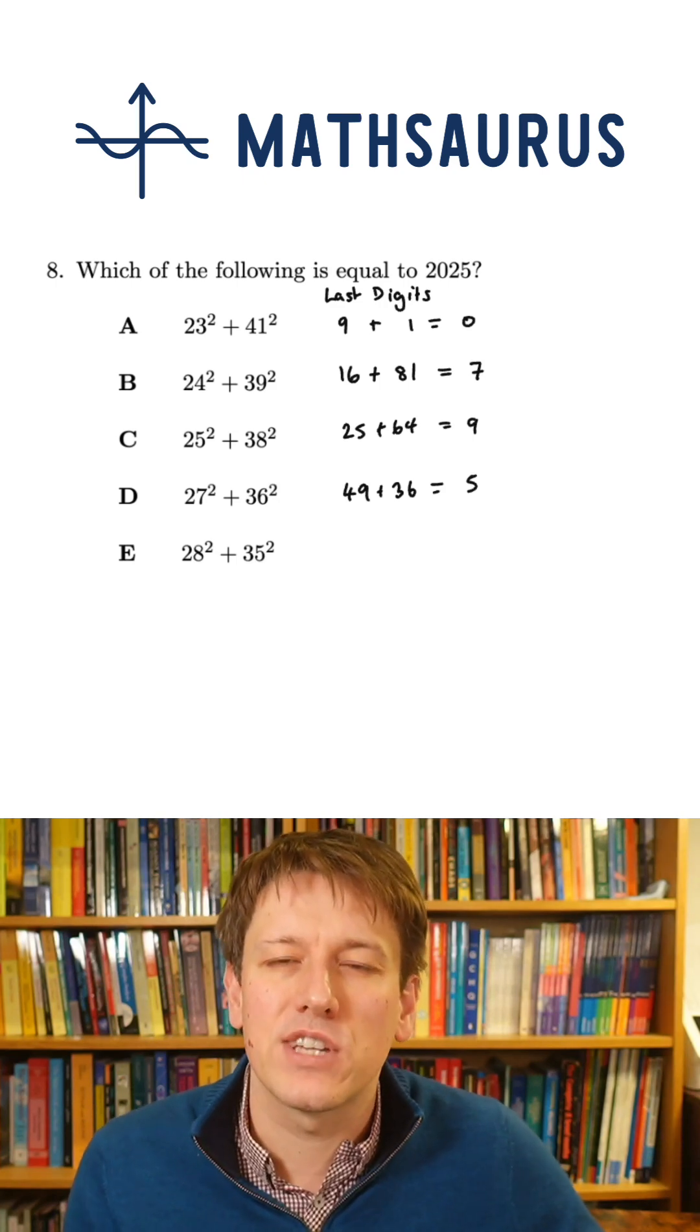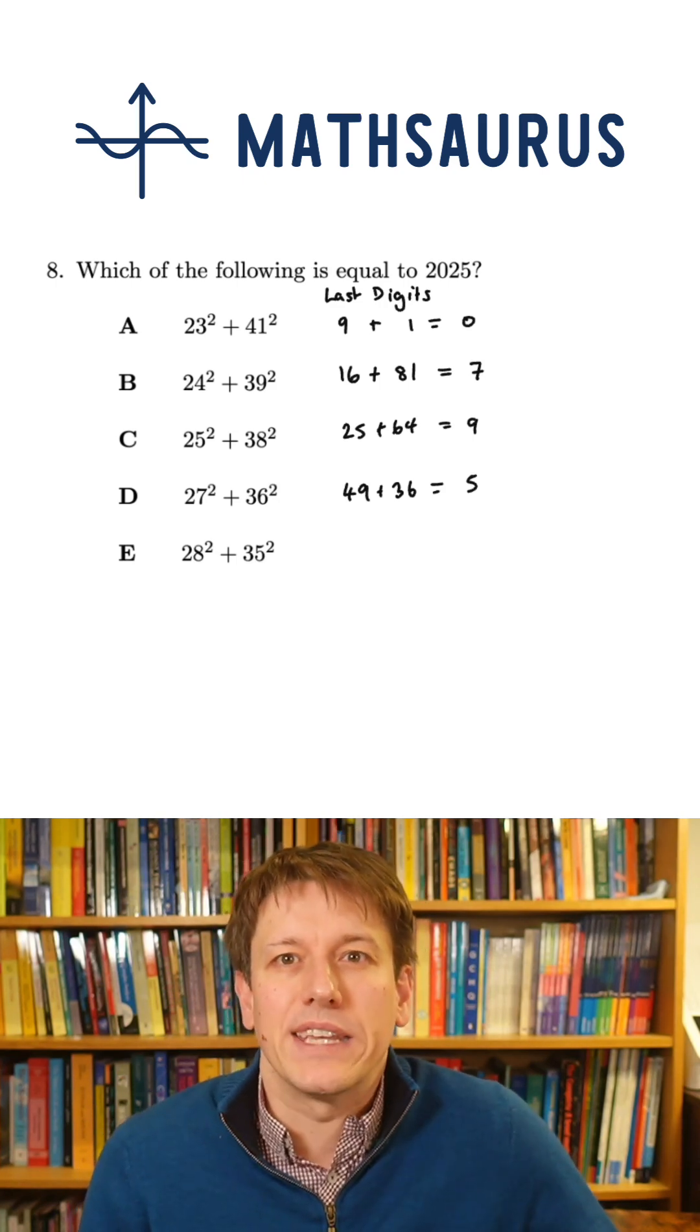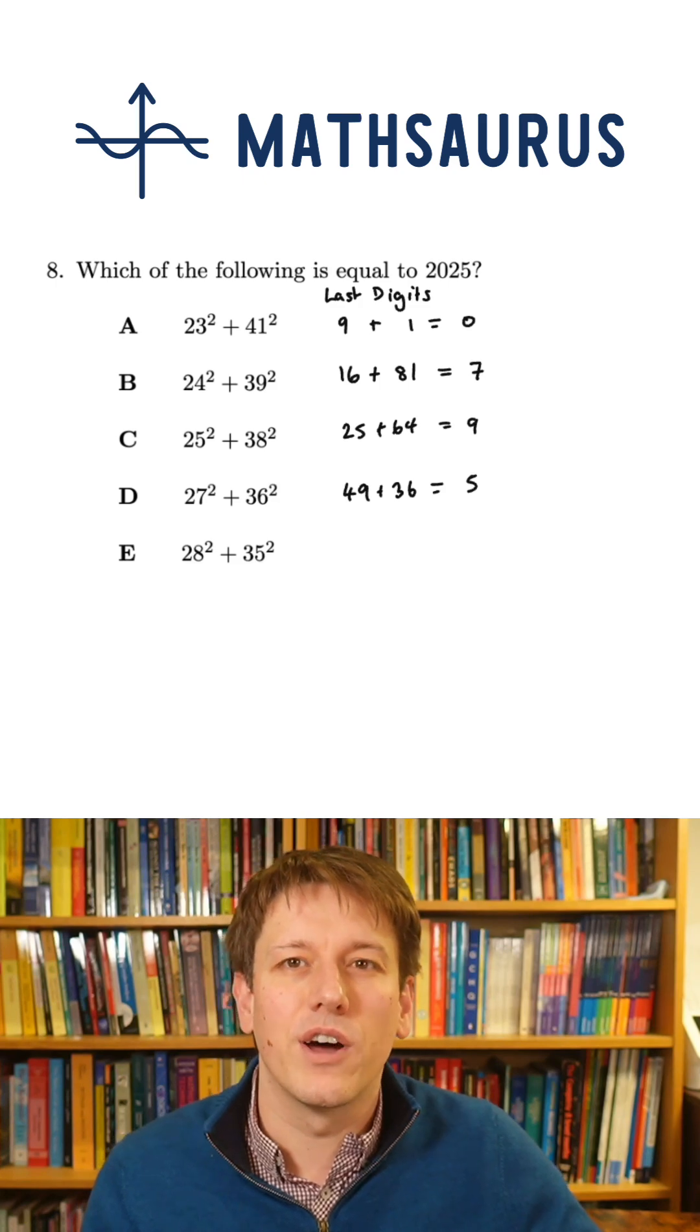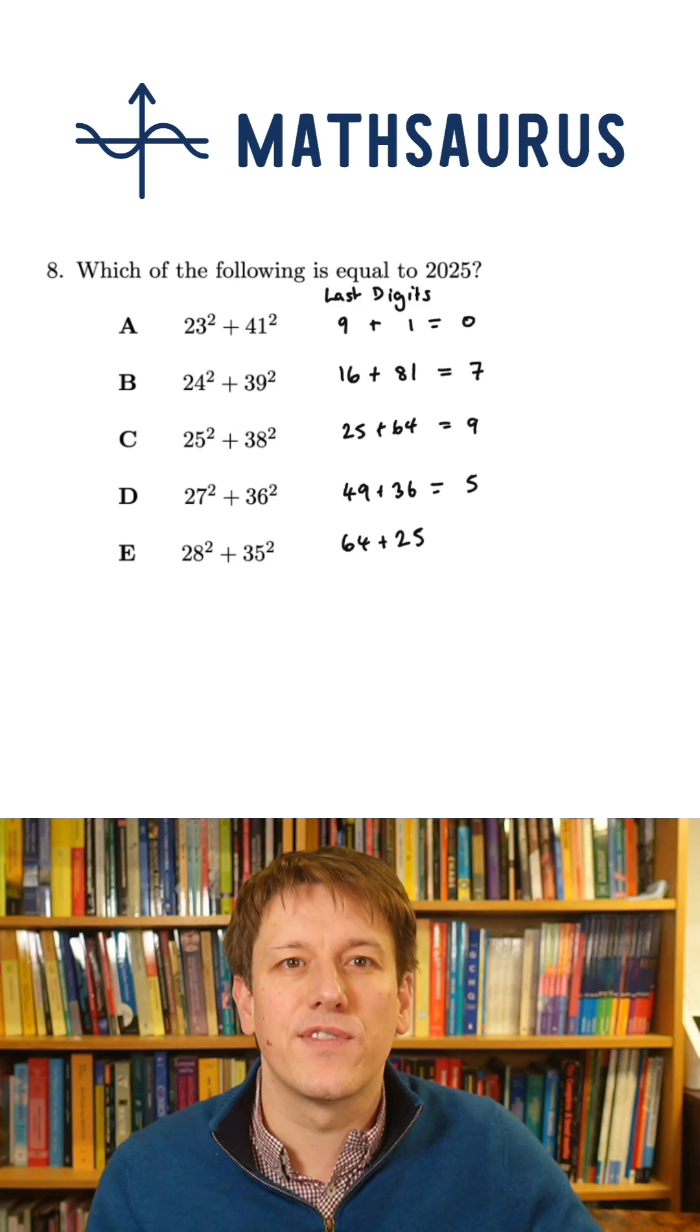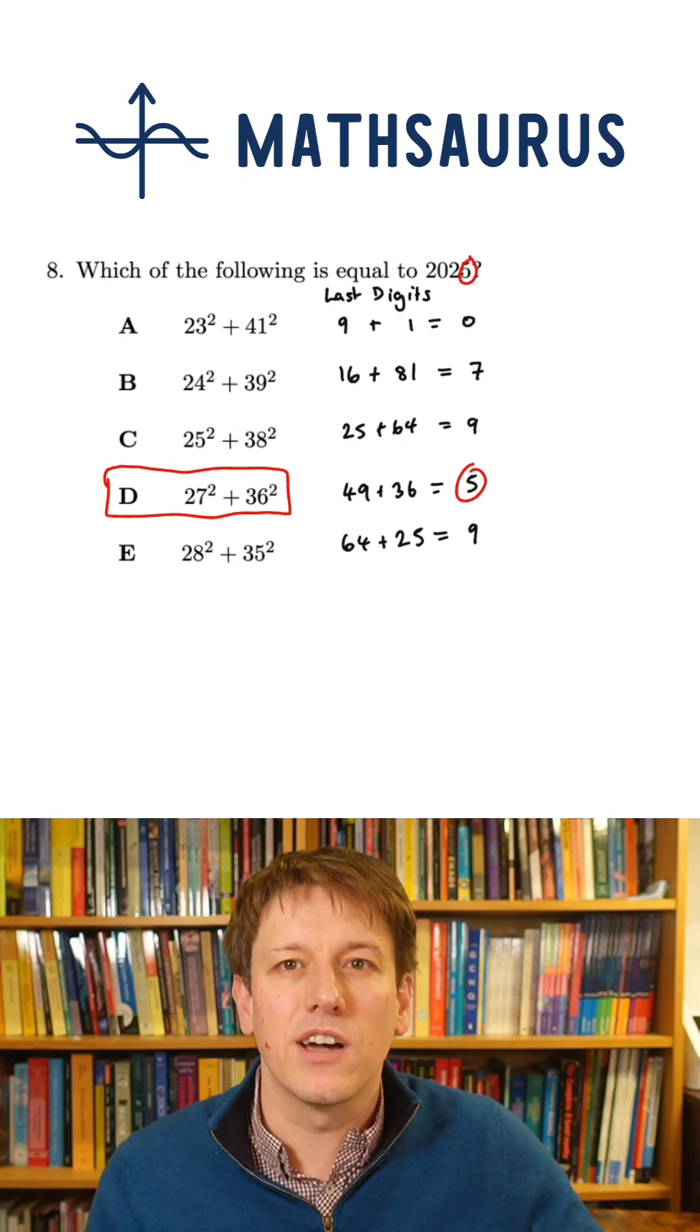We don't know it is yet because we haven't checked the last option. We might need to do some further work if E also had last digit 5. But E actually doesn't have last digit 5. It's 64 plus 25, so that would end in a 9. And the only option that can work here is D, so that would be the answer.